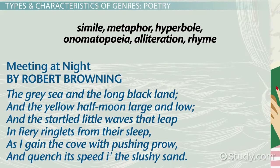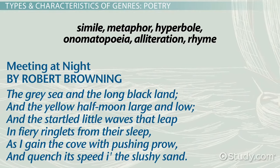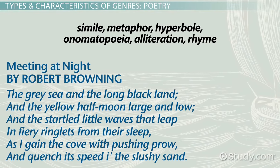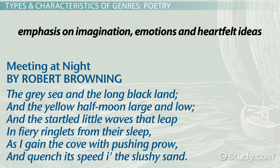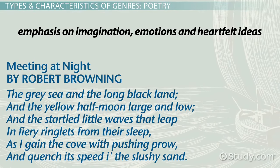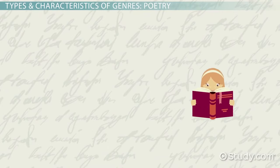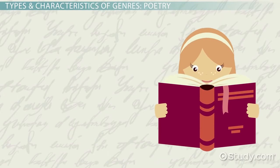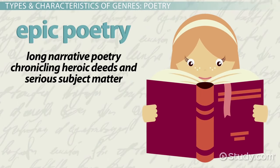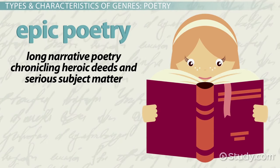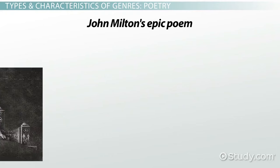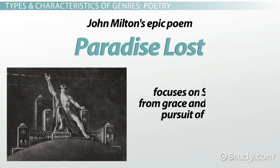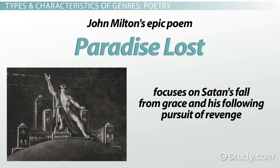Most poetry is abundant in figurative language, using devices like simile, metaphor, hyperbole, onomatopoeia, alliteration, rhyme, and much more. Poetry can claim an emphasis on imagination, emotions, and heartfelt ideas. Poetry is usually shorter than the other genres, but some poems are classified as epic poetry, which is long narrative poetry chronicling heroic deeds and serious subject matter. For example, John Milton's epic poem Paradise Lost focuses on Satan's fall from grace and his pursuing pursuit of revenge.